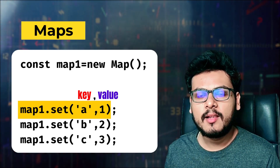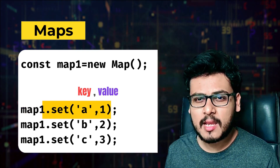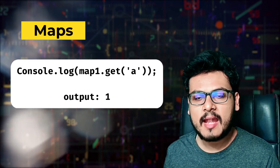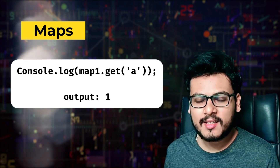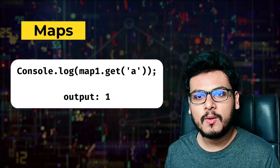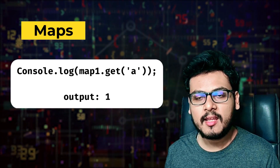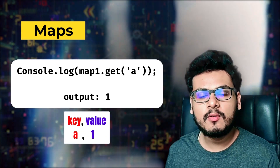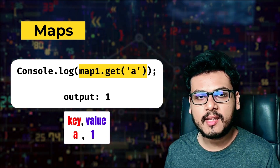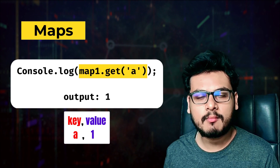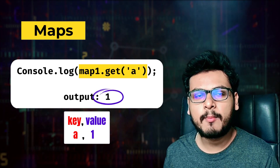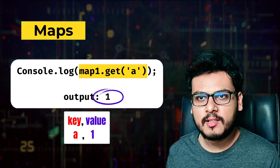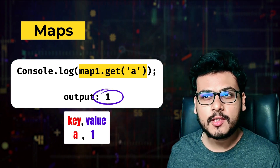Now let us have a look at another example: `console.log(map1.get('a'))`, and the expected output is 1. The key `a` was set with the value 1, so when you do `map1.get()`, you retrieve the value of that particular key. This is the `get` operation performed on maps.